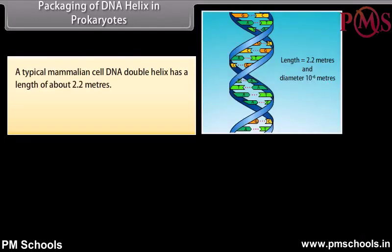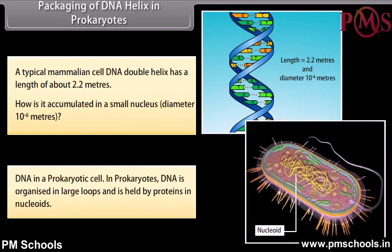Packaging of DNA helix in prokaryotes. A typical mammalian cell DNA double helix has a length of about 2.2 meters. How is it accumulated in a small nucleus? In prokaryotes, DNA is organized in large loops and is held by proteins in nucleoids.